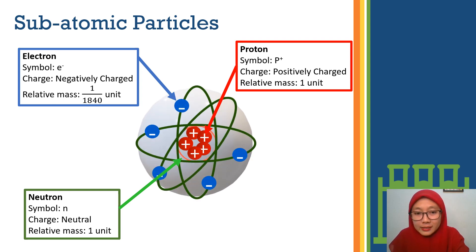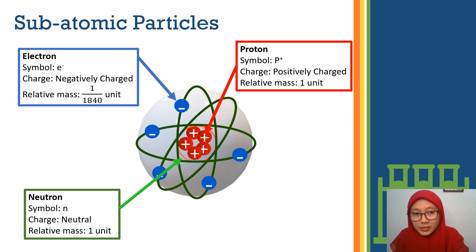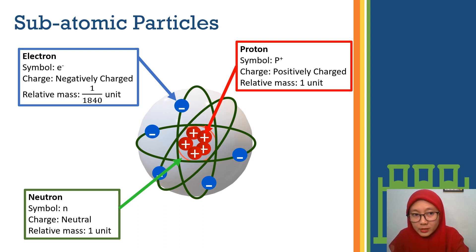This is the structure of an atom. The electron — the symbol is E negative. Electron is the negatively charged particle where the relative mass is 1 over 1840 units. That is the electron.